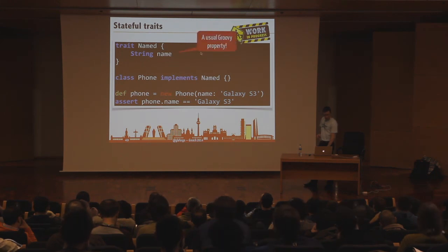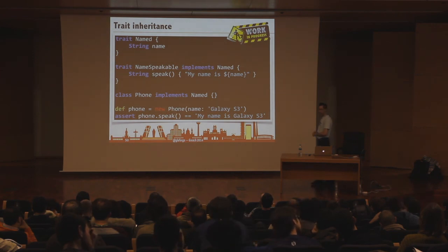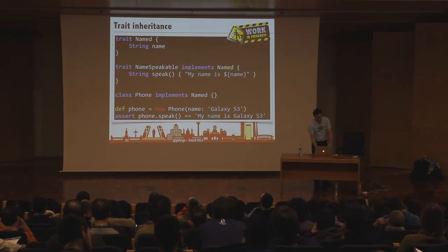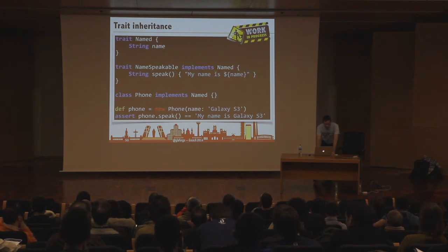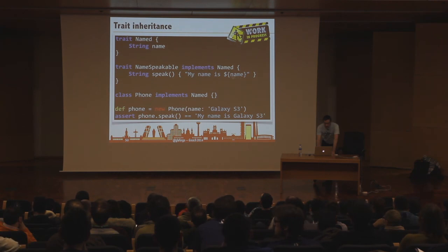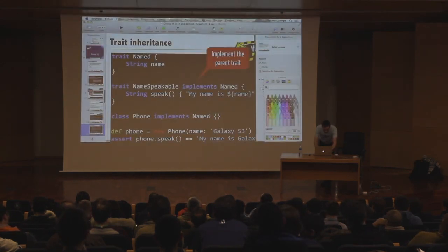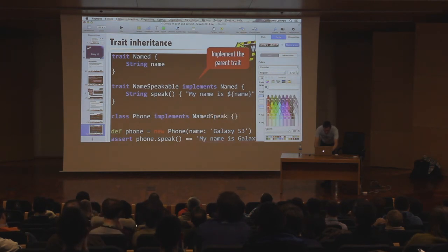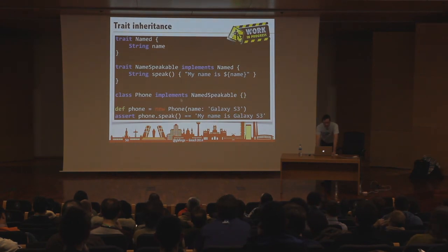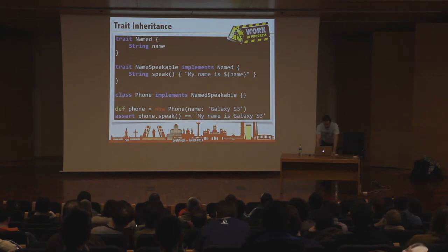You can also use the usual Groovy property notation and create your own getters and setters. Traits support inheritance: a trait 'NameSpeakable' can extend 'Named', adding a speak() method that reuses the name property from Named. A Phone implementing NameSpeakable can then say 'phone.speak()' and output 'My name is Galaxy S3'. So traits can inherit from other traits.